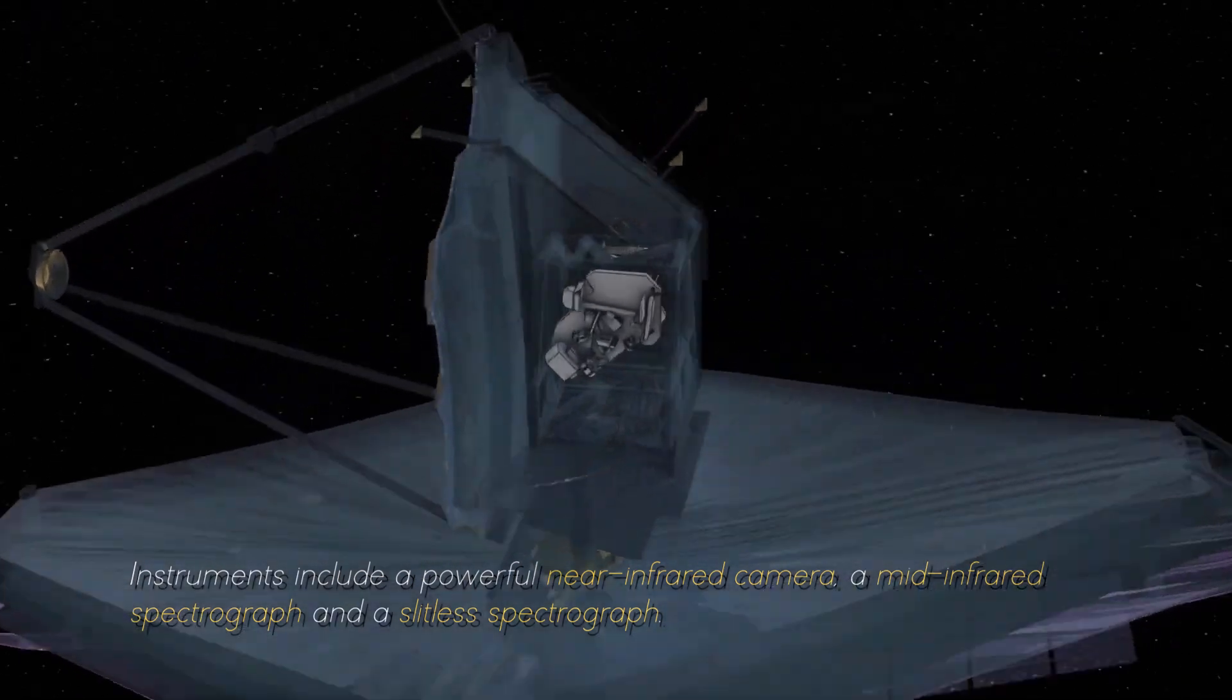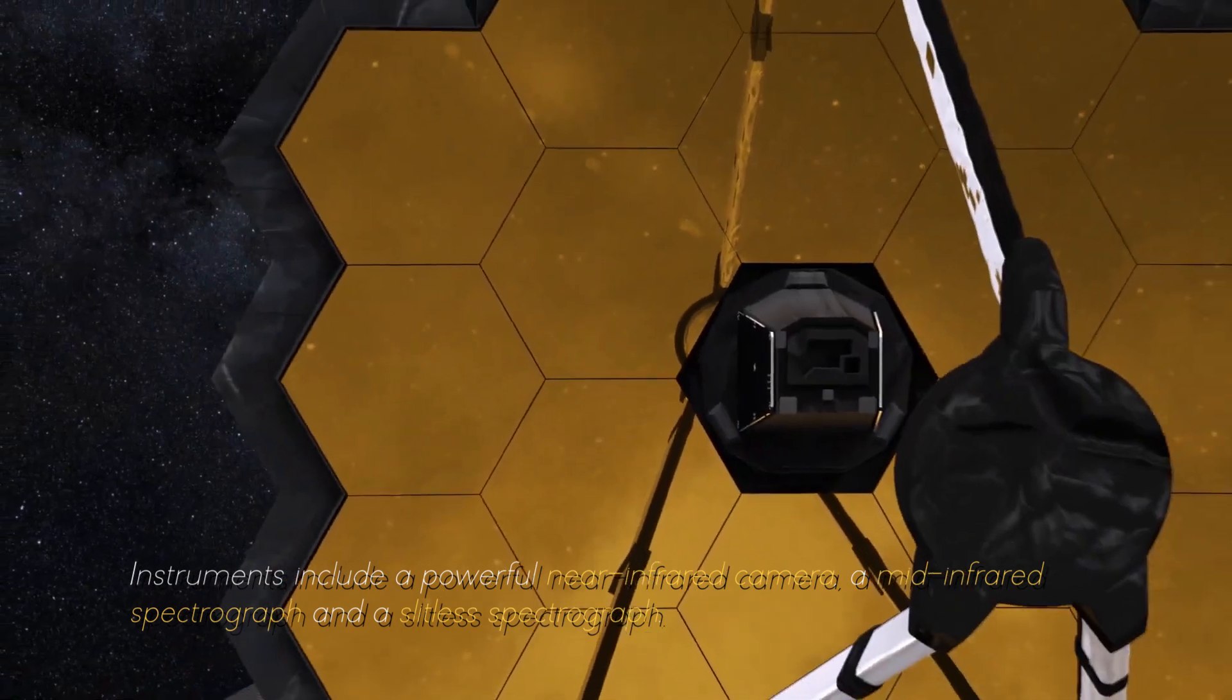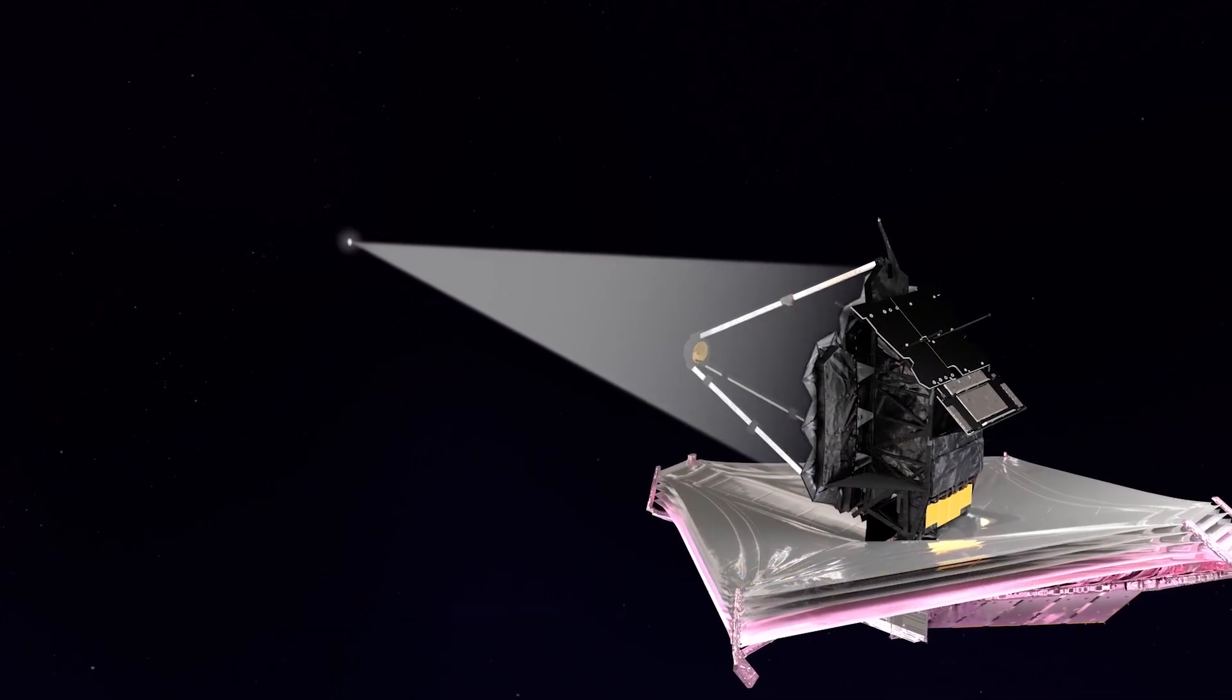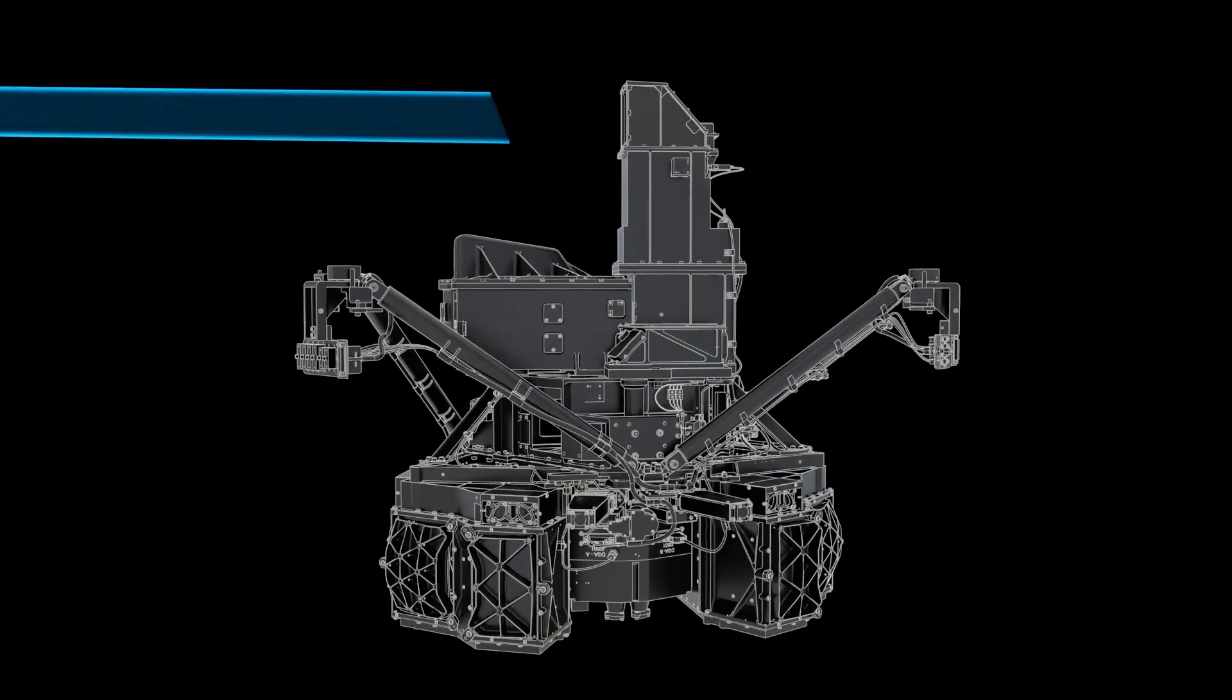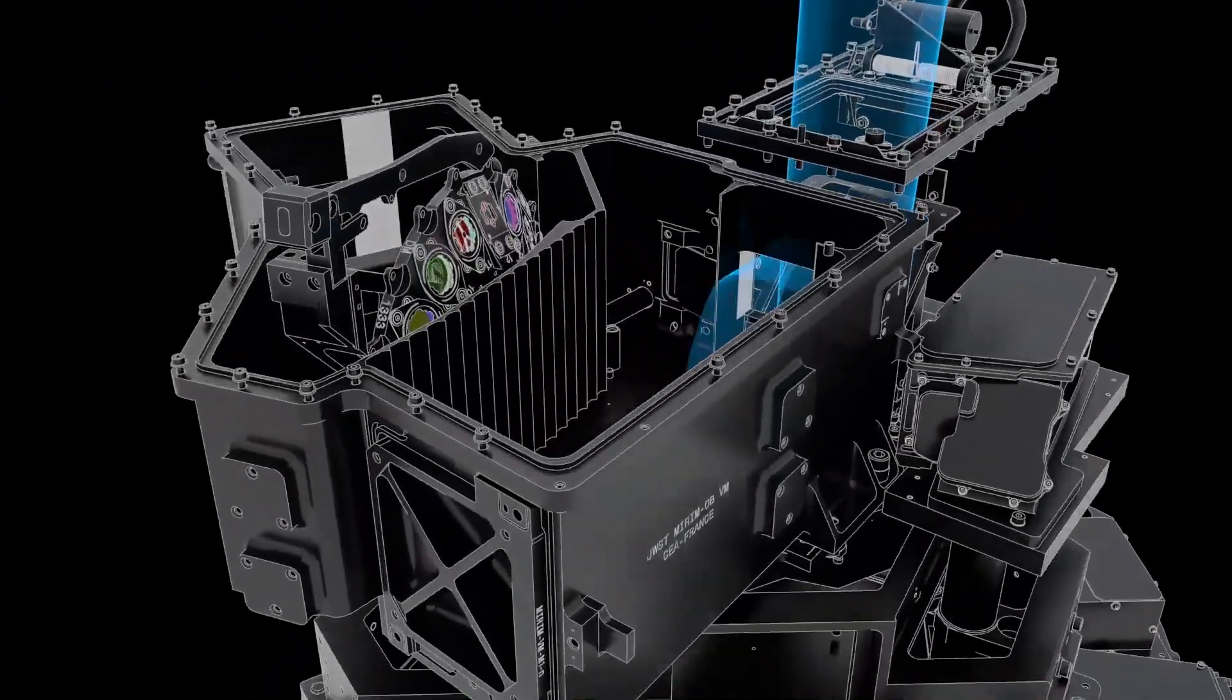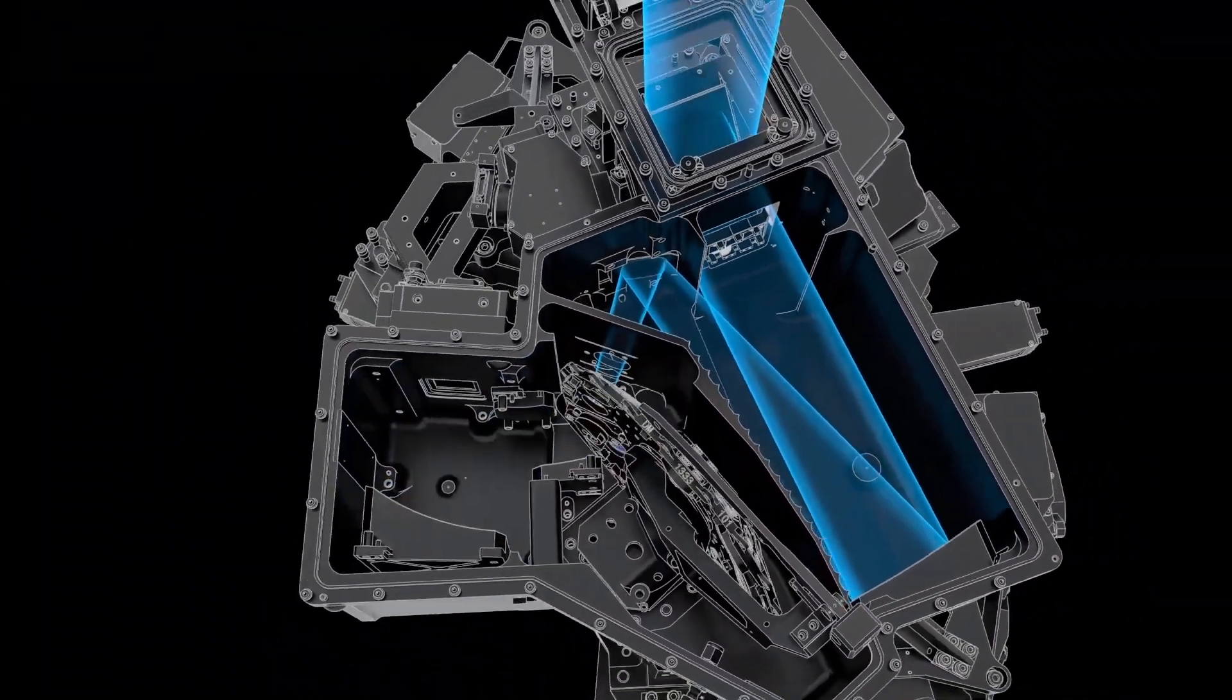This allows the JWST to collect and focus light from distant celestial objects with unmatched precision and sensitivity. Instruments include a powerful near-infrared camera, a mid-infrared spectrograph, and a slitless spectrograph. These instruments work together to capture images, measure spectra, and study the properties of objects ranging from the oldest galaxies to the planets of our solar system.